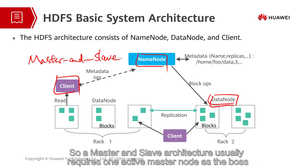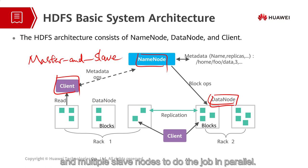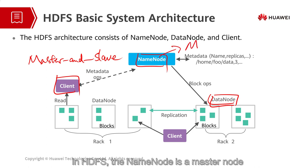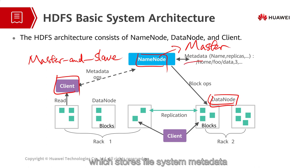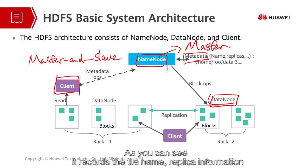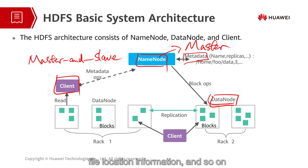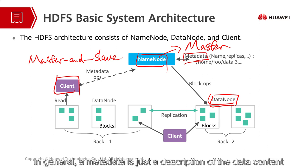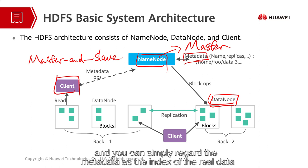Master-slave architecture is a very famous architecture for distributed clusters, and we can find it in many distributed systems. A master-slave architecture usually requires one active master node as the boss, and multiple slave nodes to do the job in parallel. In HDFS, the name node is the master, which stores file system metadata. Metadata records the file name, replica information, file location information, and so on. In general, metadata is just a description of the data content, and you can simply regard it as the index of the real data.